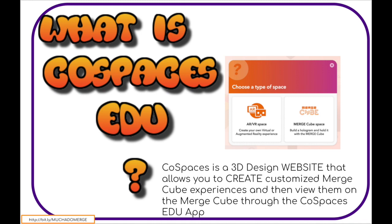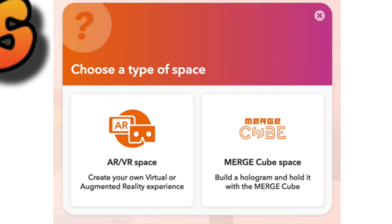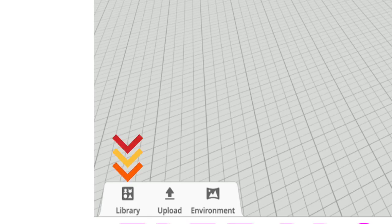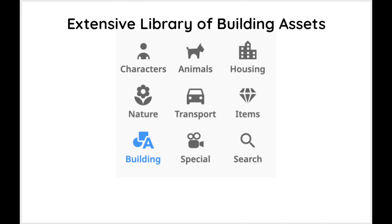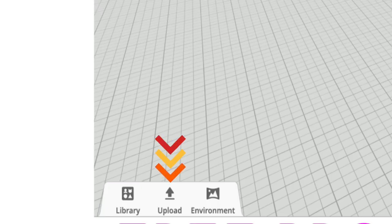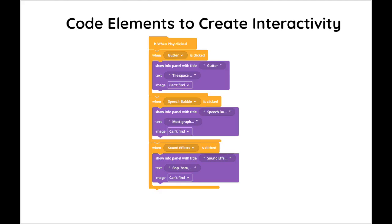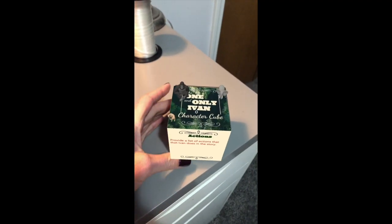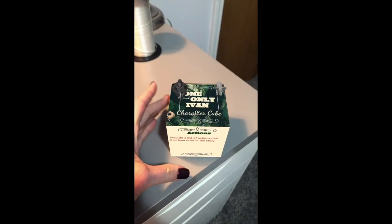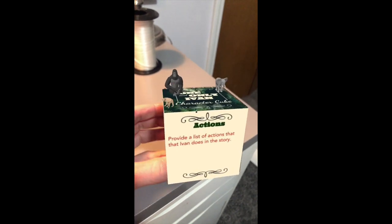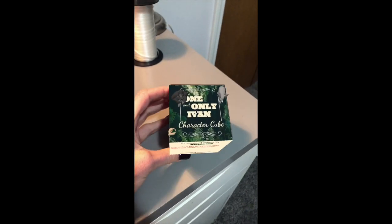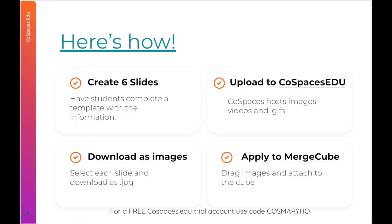Now, I want to go into a little bit more detail about what CoSpaces EDU is and does. When you first log into CoSpaces and click Create Space, you're going to be working with this Merge Cube space. On the lower left-hand corner, you'll see that there's a library which offers an extensive variety of resources. That same section also has an upload feature where you can upload your own JPEG or PNG images. CoSpaces EDU even has a coding platform where students can animate features that they've selected. During our presentation today, I'm going to take you step by step through the creation of this One and Only Ivan story cube. What's really neat about this cube is that each of these sides was created on a Google slide, and then the slides were uploaded into CoSpaces EDU and were attached to the Merge Cube for viewing.